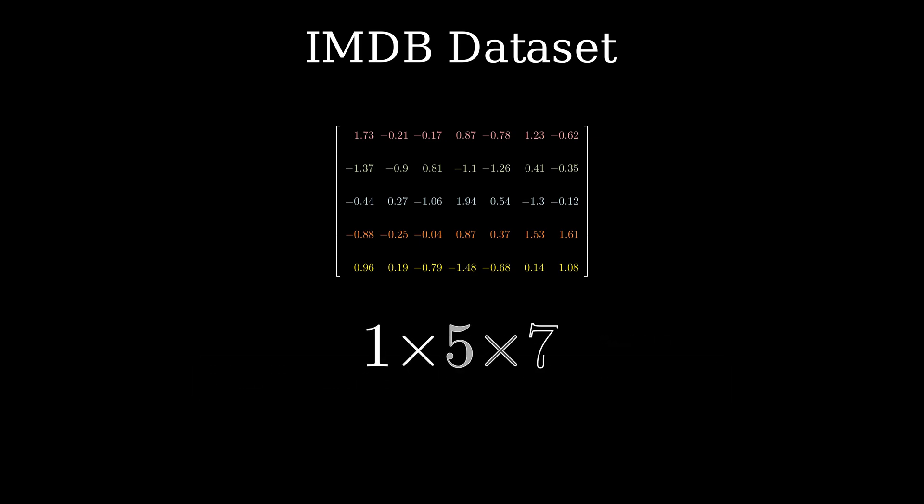So just to recap, we have now transformed and stored the review in form of a tensor of shape 1 x 5 x 7, where 1 is because I'm only looking at a single review, and 5 is for the number of words in this review, and 7 is the embedding dimension. By the way, you can find the code for doing all of this in the video description.